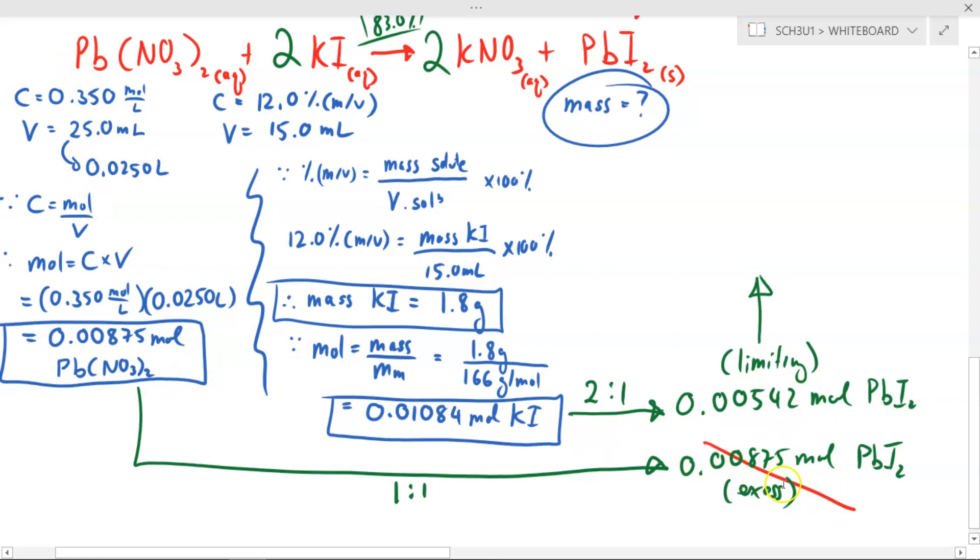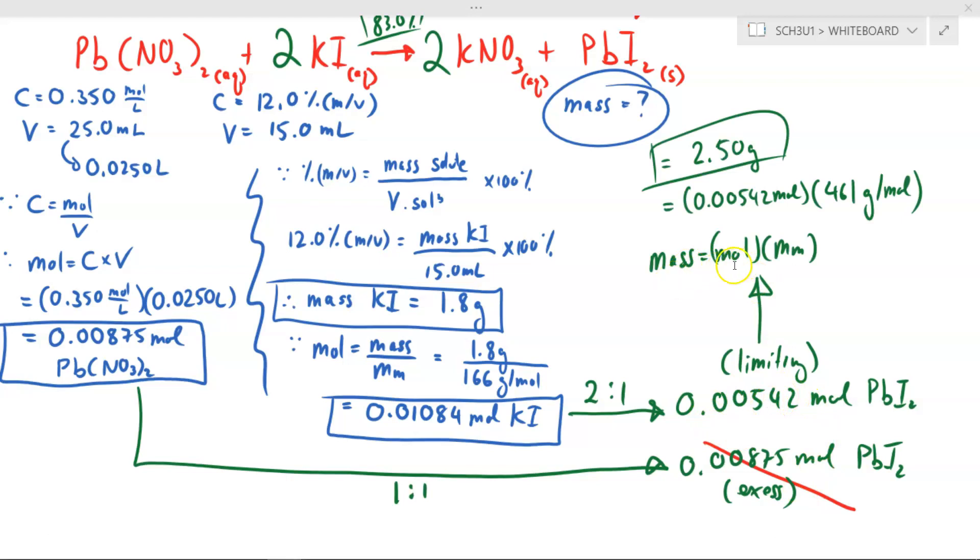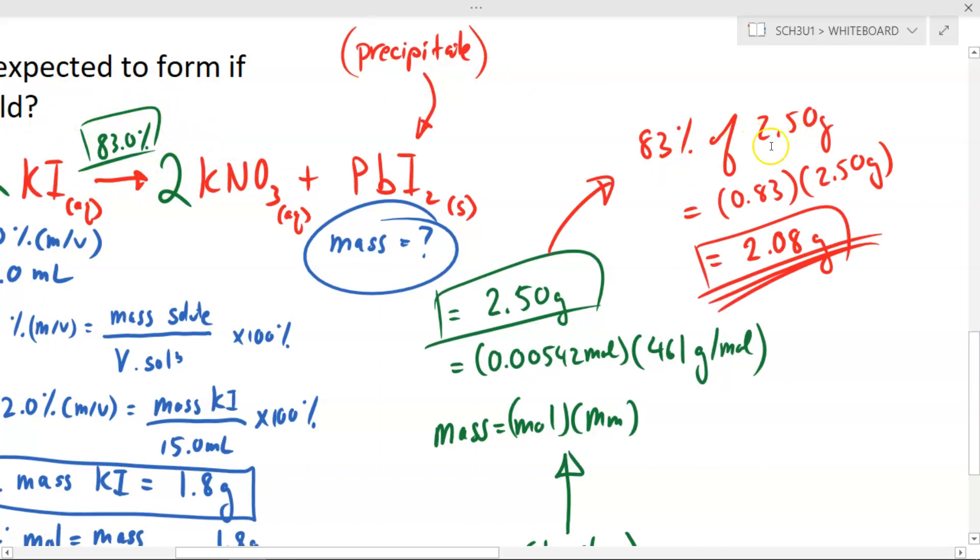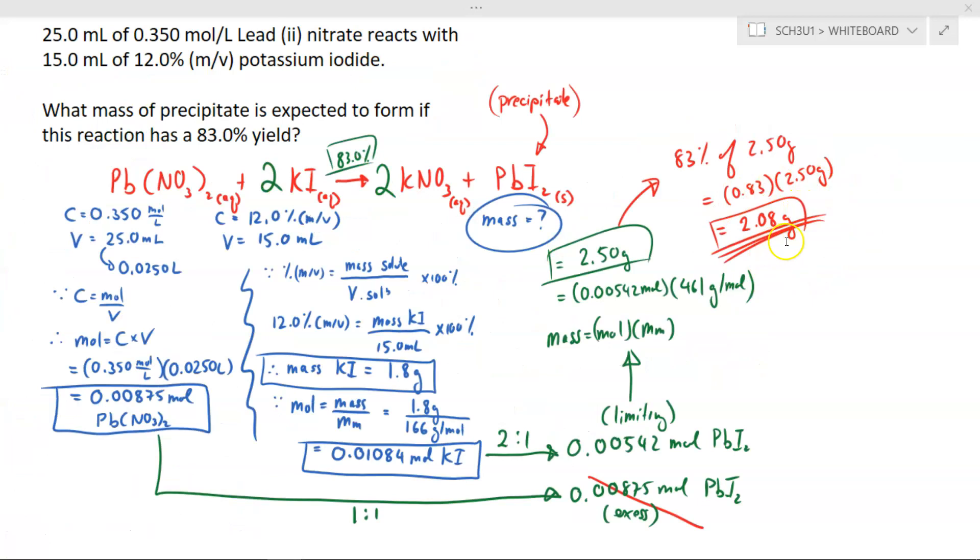We don't trust the excess, it's just wishful thinking, so let's continue on with the limiting reagent. Since mass is equal to moles times the molar mass, the mole of lead iodide is 0.00542. Molar mass of lead iodide is 461 grams per mole. We find this from the periodic table. Multiply the two together, and we get a mass of 2.50 grams of my precipitate. But because this reaction is only 83% successful, 83% of 2.50 grams is 2.08 grams. So there you have it, 2.08 grams of precipitate is expected to form if this reaction has an 83% yield.